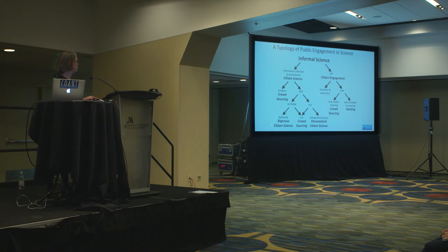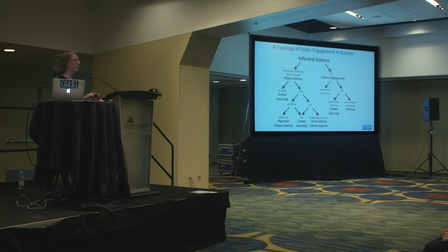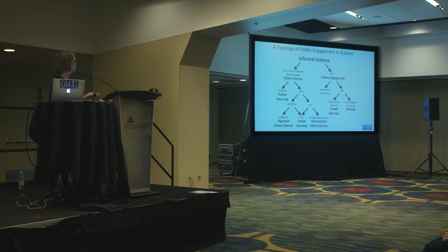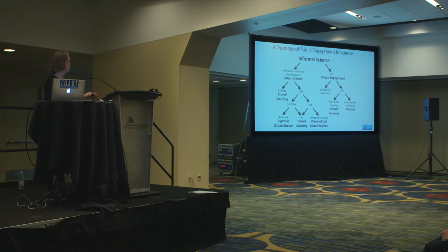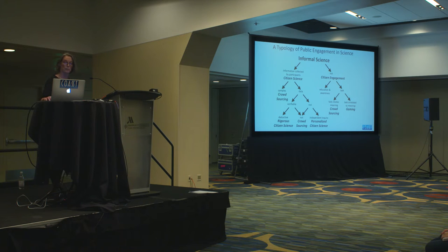The one I want to focus on today is rigorous citizen science — where information is collected by participants in the form of data or some distillation of what's in front of you. It's data that are verifiable, and it relies on some amount of deductive reasoning. But there are different pathways to get to different places, and that's one of the things about public engagement: it's not one size fits all.